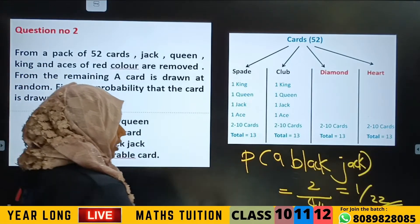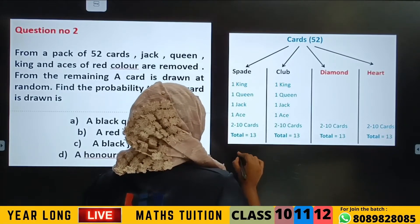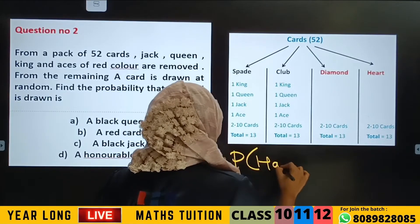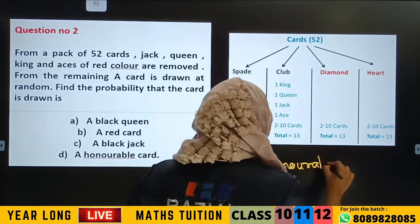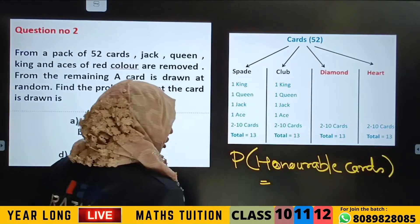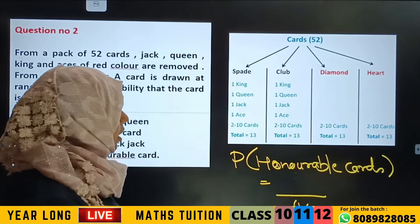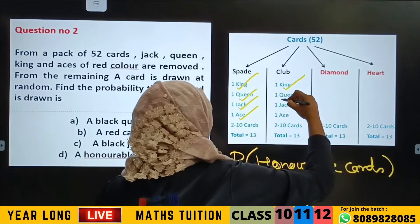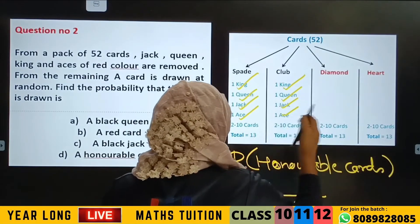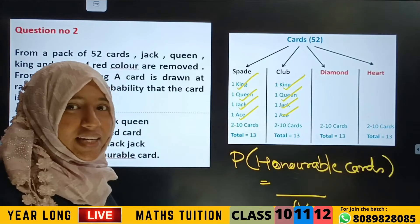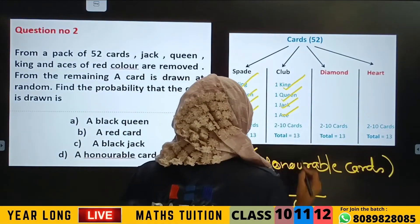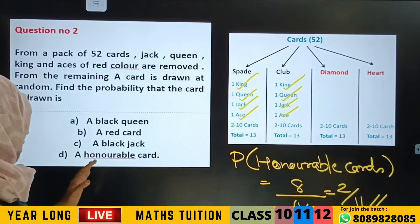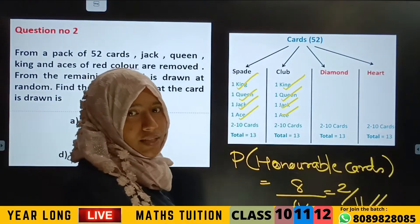Next is probability of getting a honorable card. The honorable cards are King, Queen, Jack, and Aces. The honorable cards from spade: King, Queen, Jack, Aces. Now these are 4 cards remaining for black suits since red honorable cards were removed. So 4 by 44, which can be simplified by cancelling 2, giving 2 by 11. The probability is 2 by 11 for this given situation. Clear?